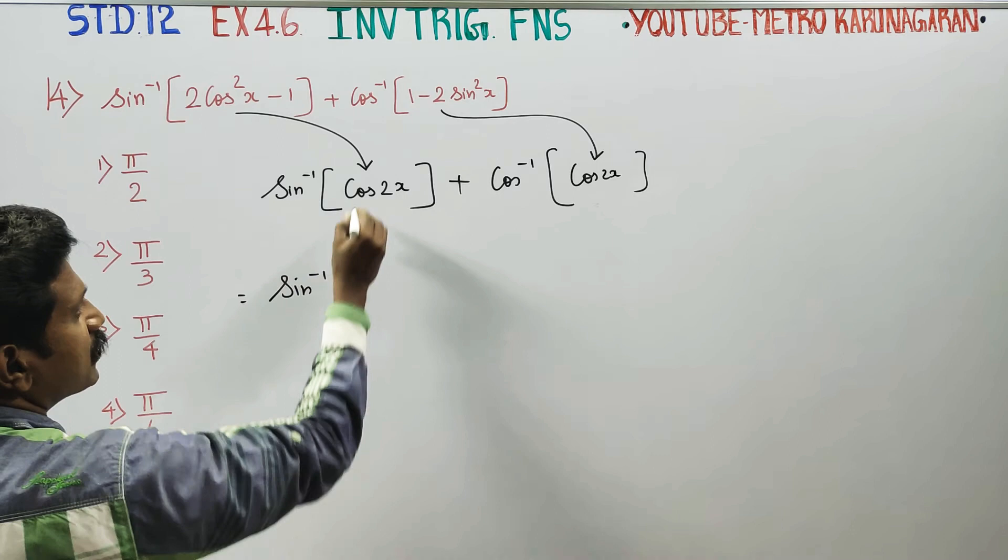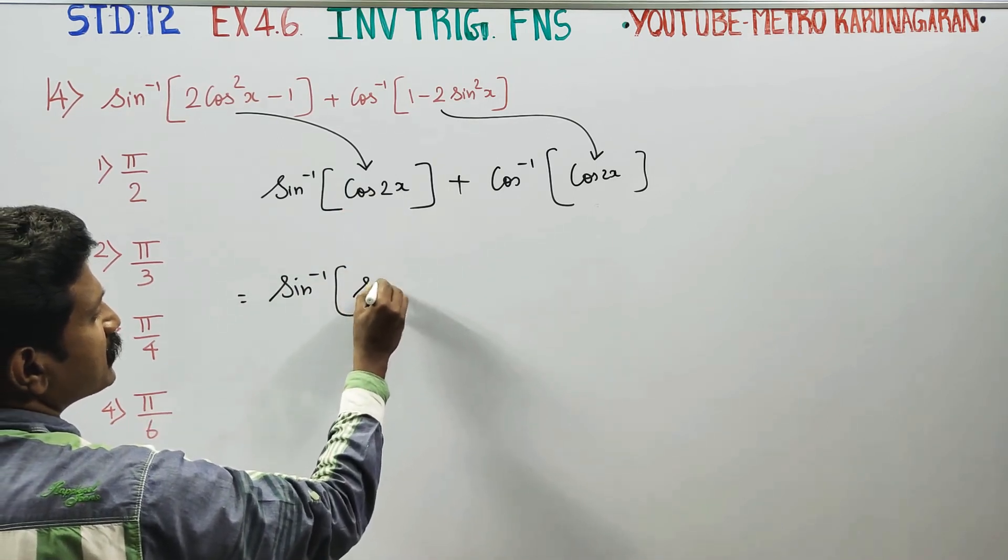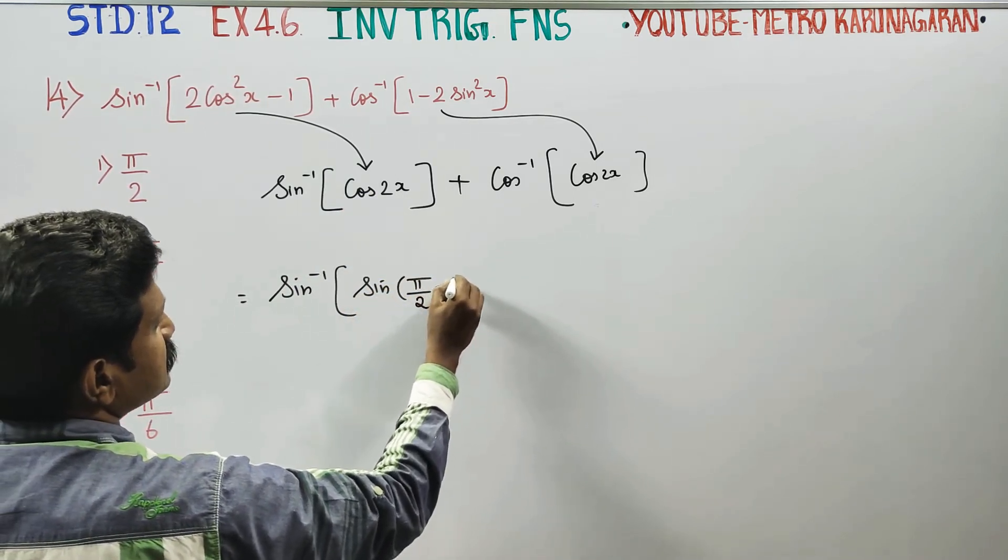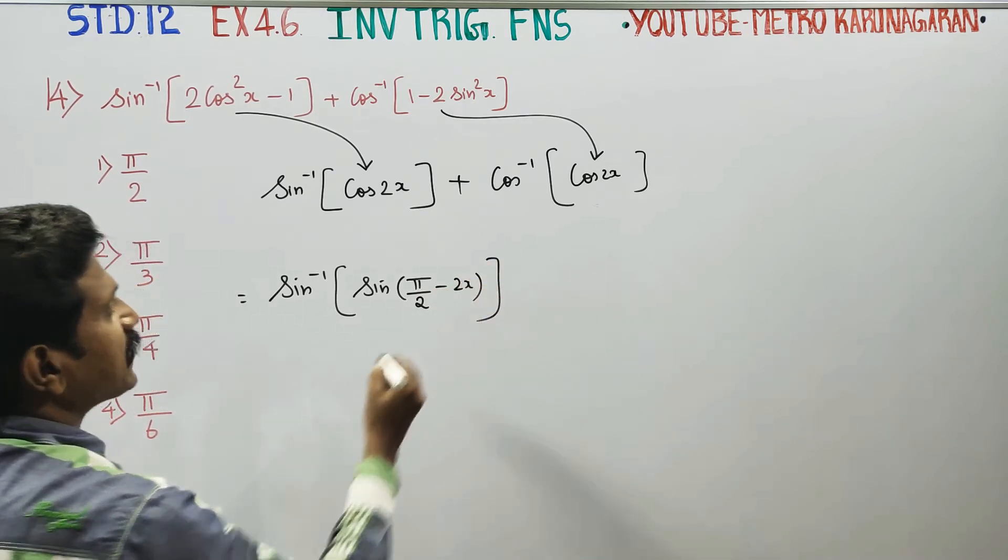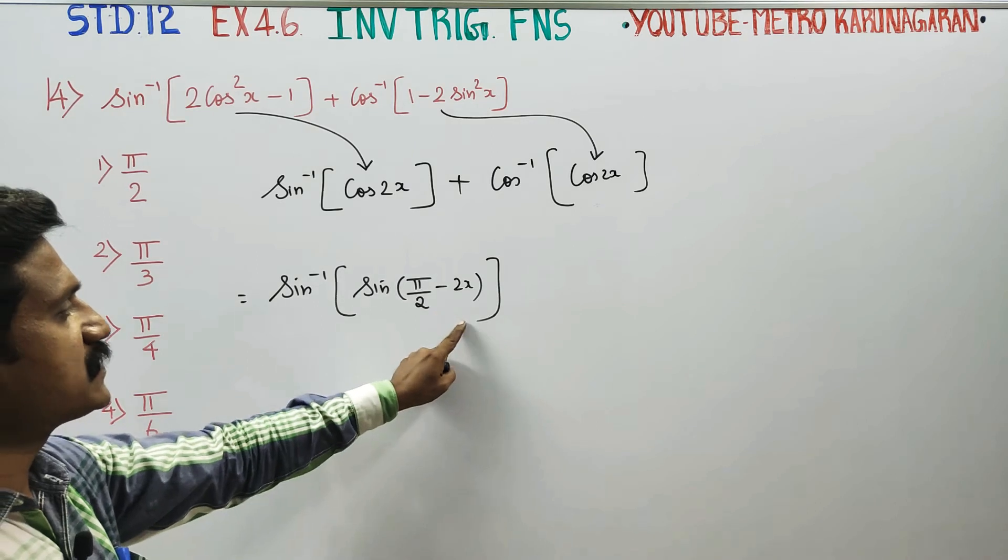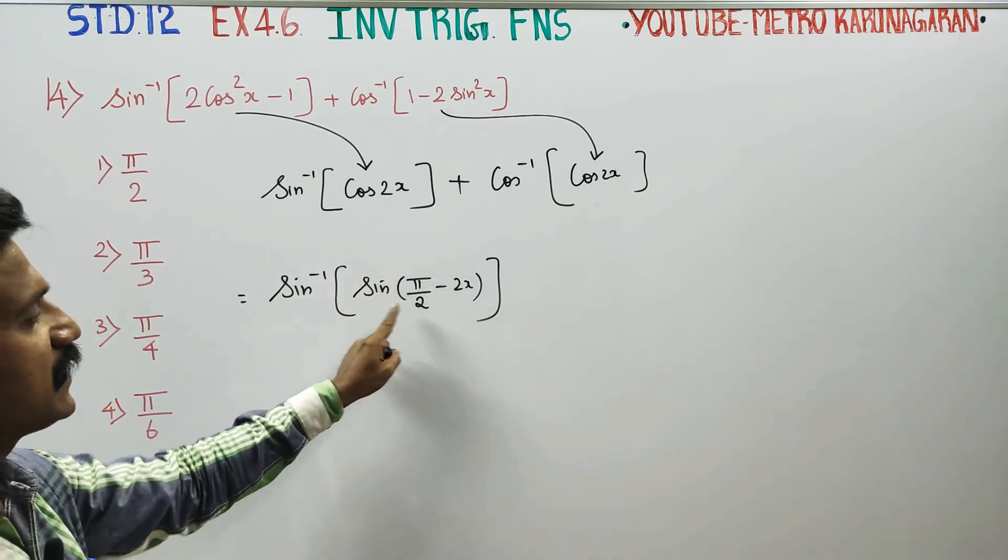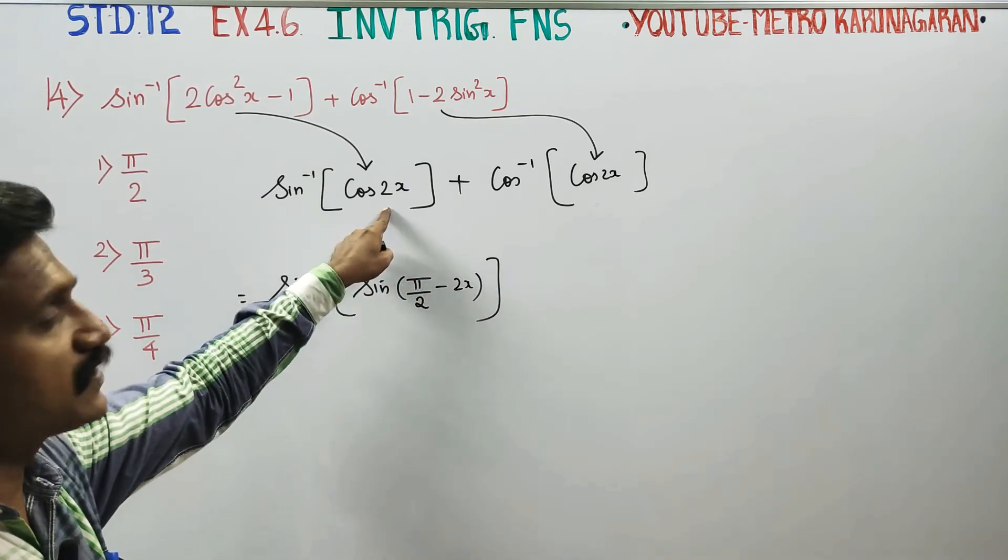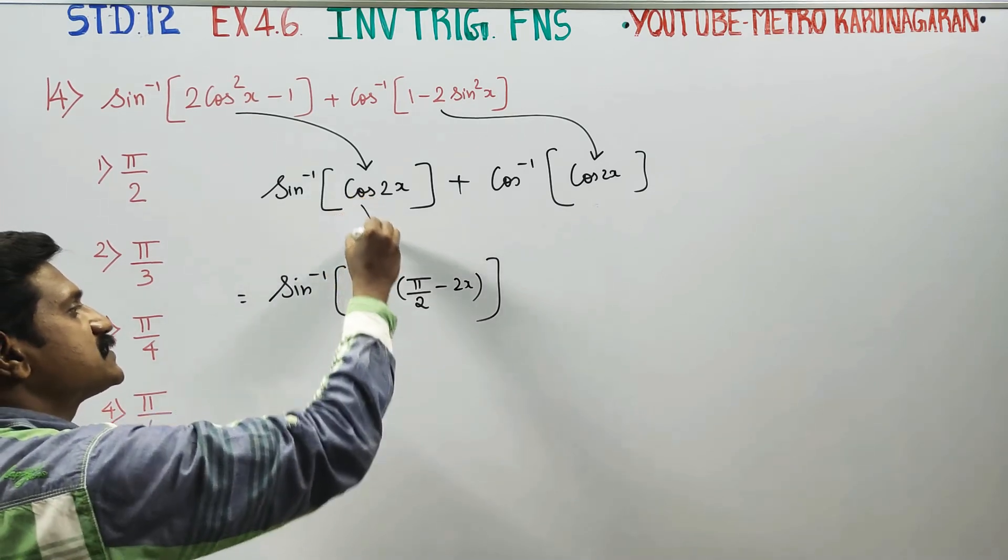Sin inverse of cos can be written as sin of 90 minus theta. Since sin(90° - θ) equals cos θ, cos can be written in sin form.